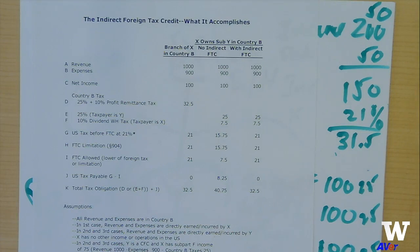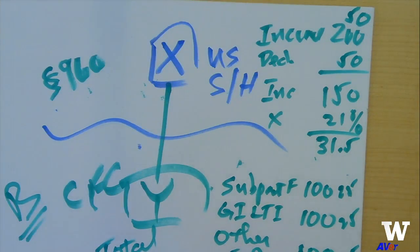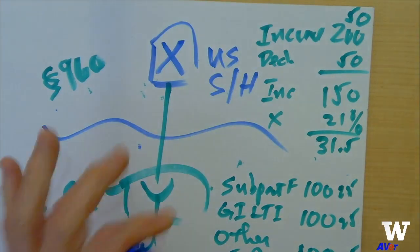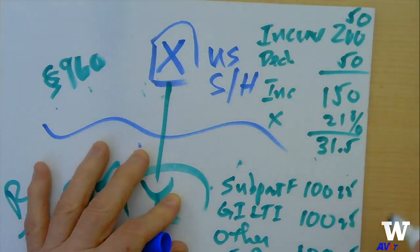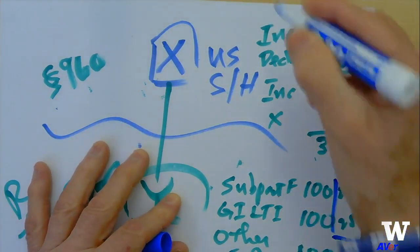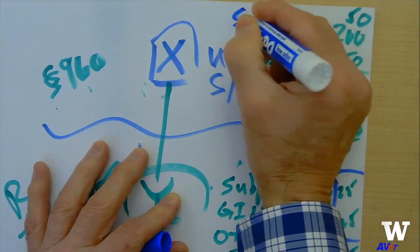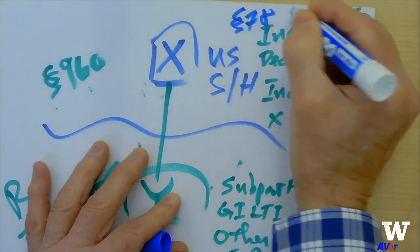We said that if there were not that increase, then everybody would choose to do business through a foreign subsidiary and would never use a branch. That's what this 50 is at the top. It's the section 78 gross up, which is of the deemed paid taxes, which is these two here.